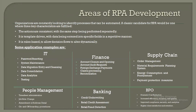Third, it is rule-based to allow decision flows to alter dynamically. In addition to these three points, there is a fourth: cognitive capabilities based on artificial intelligence and machine learning. Python is a language well suited for data science, AI, and machine learning algorithms. There are also chatbots for cognitive purposes — IBM Watson is one of the best chatbots available.